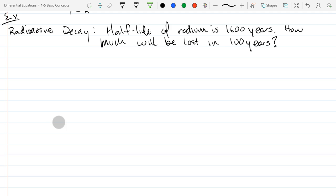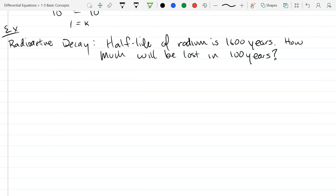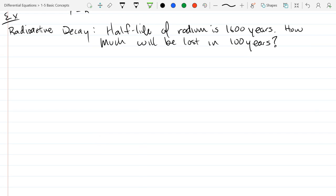We're going to set up a differential equation for this. So we need some variables. I think we'll use the same ones we used last time. x for amount, t for time, in years.